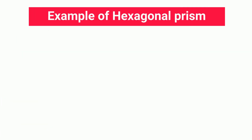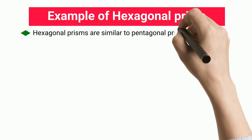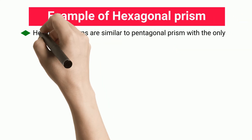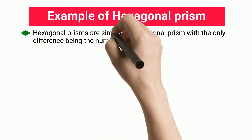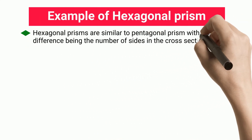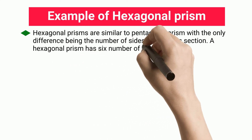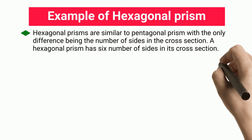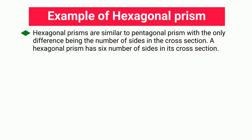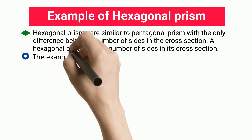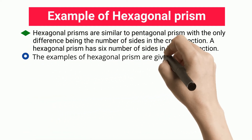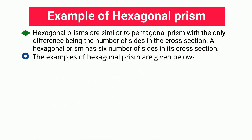Example of hexagonal prism: hexagonal prisms are similar to pentagonal prisms, with the only difference being the number of sides in the cross-section. A hexagonal prism has six sides in its cross-section. The examples of hexagonal prism are given below.